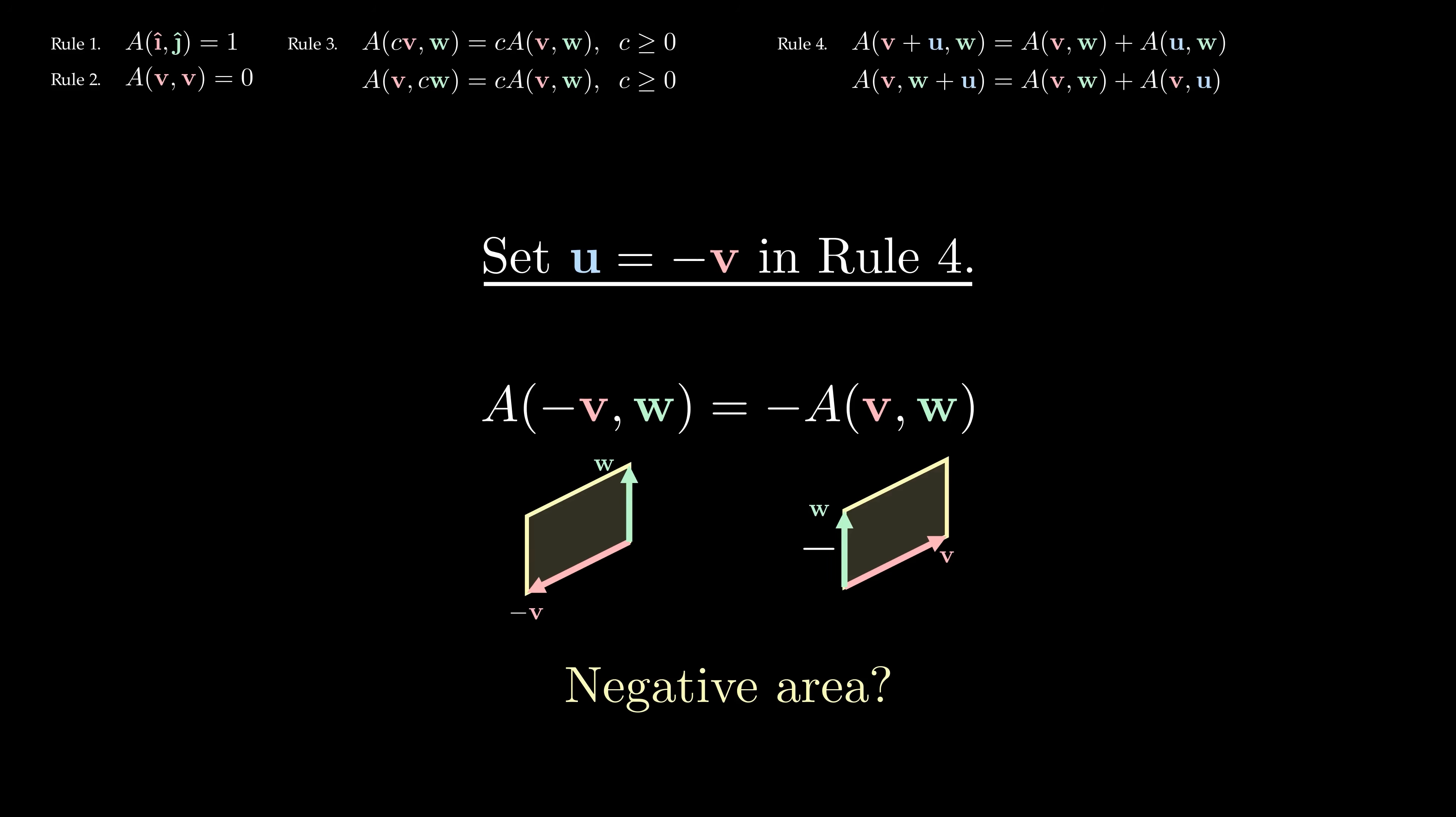This looks bad, since area is never negative, but it looks like we just pulled a minus 1 from the area function A. Here, you could give up and reject these rules as nonsense. But a lot of the most interesting mathematics comes from seeing where nonsense leads us.